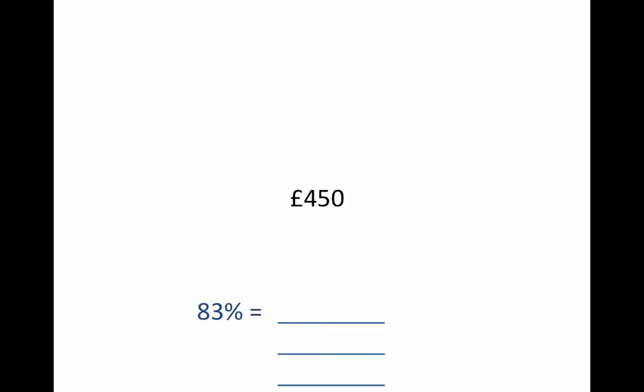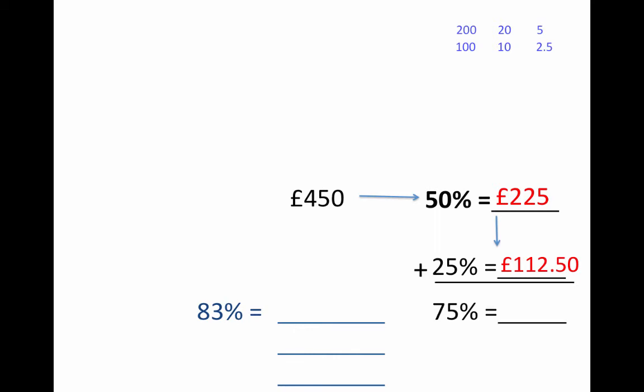If I was given a question such as 83% of £450, then I'd still carry on in exactly the same way as before. That would be find 50%, find 25%. Now £225 maybe isn't the nicest number to halve, so we can use old techniques—splitting into its hundreds, tens, and units, halving those individually to get the answer £112.50. And then adding those together to find 75%.